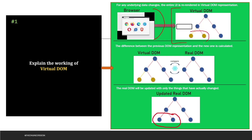The second step is that the difference between the previous DOM representation and the new DOM is calculated. So it will identify what are the updated changes. Instead of re-rendering the complete thing, it only identifies the two particular changes.